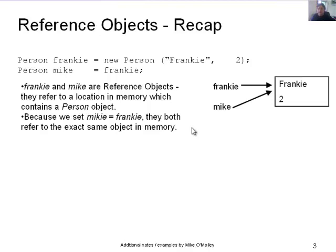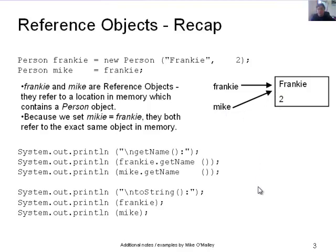Here's an example of how that might look in memory. Frankie points to a location in memory that contains the name Frankie and the age two — that's a person object. Mike also refers to that same memory location.